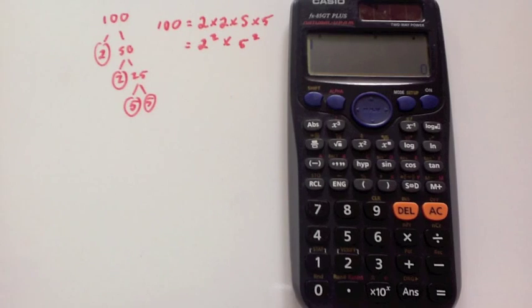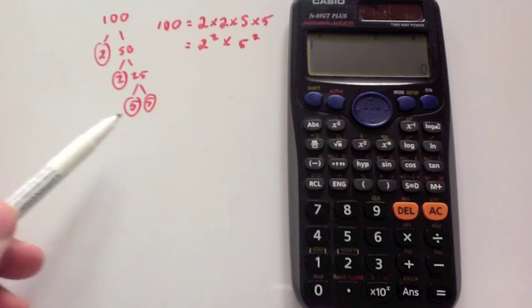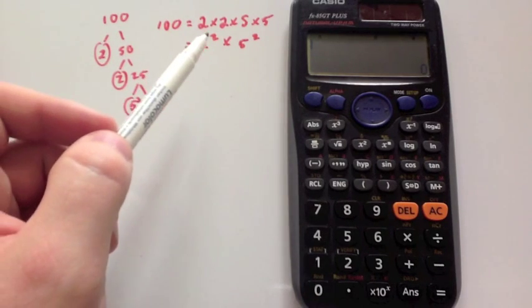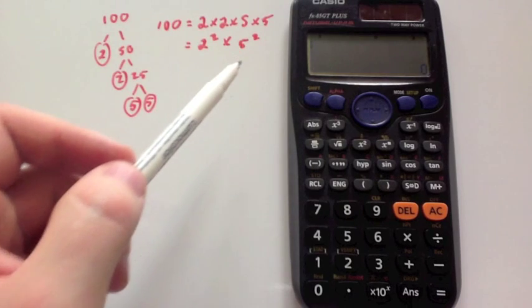In this video we're going to look at how to write a number as a product of primes using your calculator. Here I've got 100 and I've written it as a product of primes using a prime factor tree: 2 times 2 times 5 times 5, or 2 squared times 5 squared.